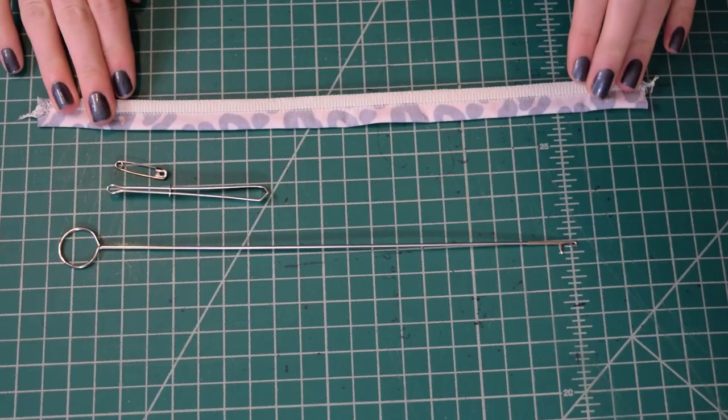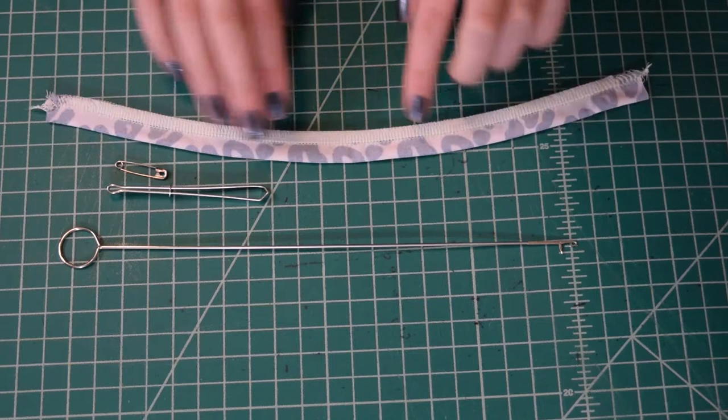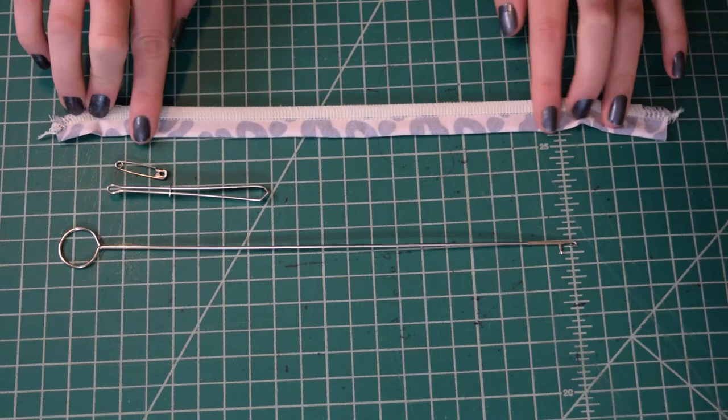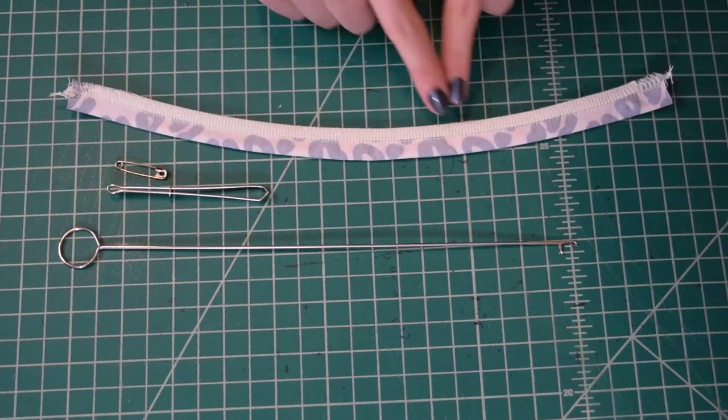So I have here a strap that I've sewn right sides together and this is actually going to be a strap for a swimwear project that I'm working on. This is made out of a knit swim fabric and I've also sewn elastic into the seam of the tie, so there's elastic sewn into the serging.